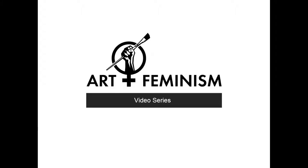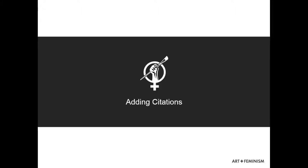Adding citations is one of the simplest ways that you can contribute to Wikipedia. Working to make sure that articles are well cited ensures that they don't get deleted, and also offers further avenues for research for a Wikipedia user visiting the article.